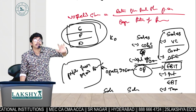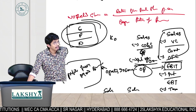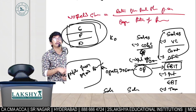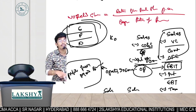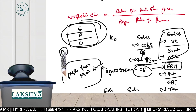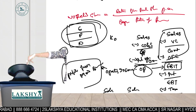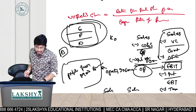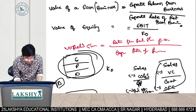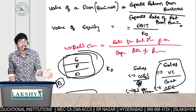The expected return from the business is the expected return of all the investors combined. The expectation of all investors is not only cost of equity, not only cost of debt, but the total cost of capital. That's why the denominator is Ko — the overall cost of capital, not just Ke.